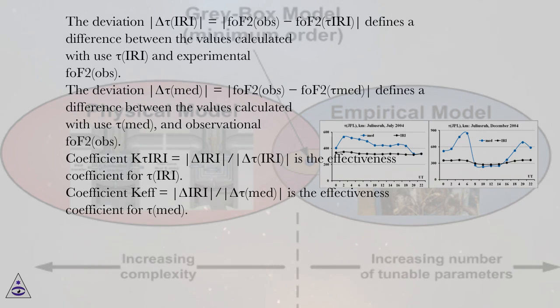Coefficient Kef equals delta IRI vertical bar slash vertical bar delta tau MED is the effectiveness coefficient for tau MED.